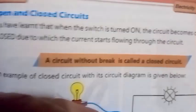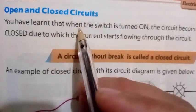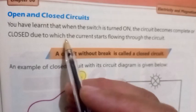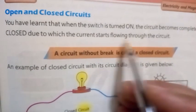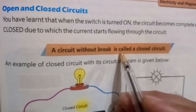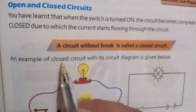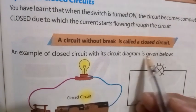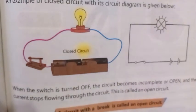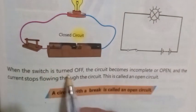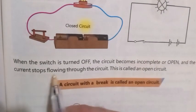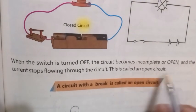Open and Closed Circuits: When the switch is turned on, the circuit becomes complete or closed, and the current starts flowing through the circuit. A circuit without a break is called a closed circuit. An example of a closed circuit with its circuit diagram is given. When the switch is turned off, the circuit becomes incomplete or open, and the current stops flowing through the circuit. This is called an open circuit.